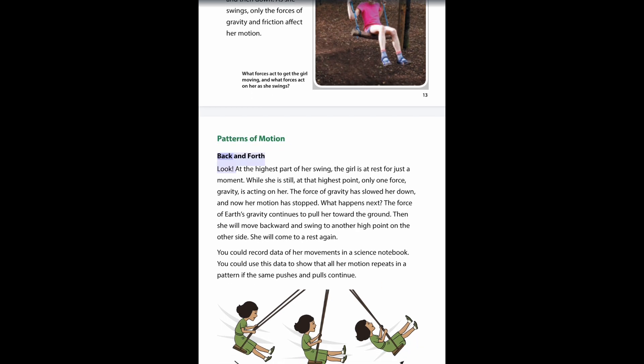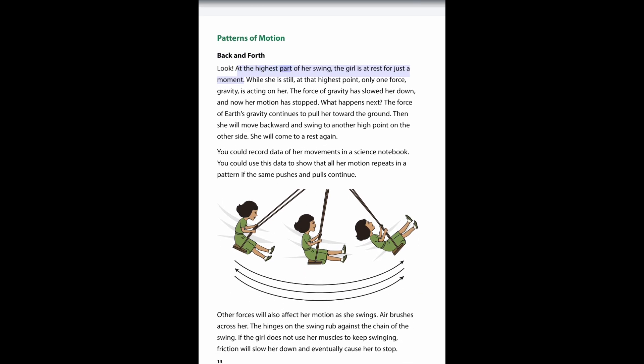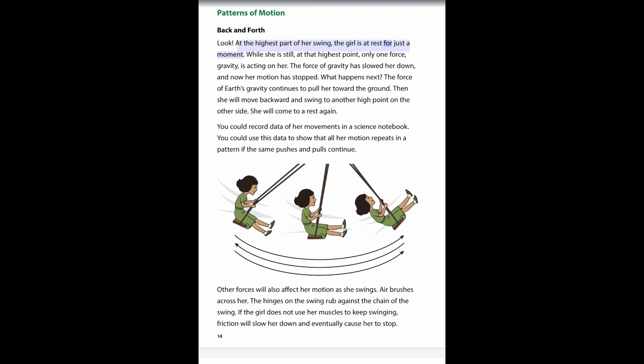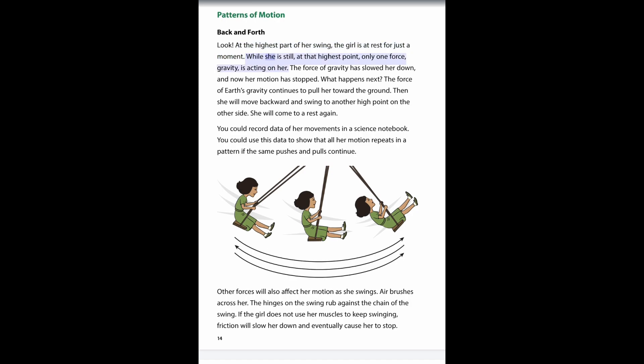Patterns of motion: back and forth. Look at the highest part of her swing - the girl is at rest for just a moment. While she is still at that highest point, only one force, gravity, is acting on her. The force of gravity has slowed her down, and now her motion is stopped. What happens next? The force of Earth's gravity continues to pull her toward the ground. Then she will move backward and swing to another high point on the other side. She will come to a rest again.